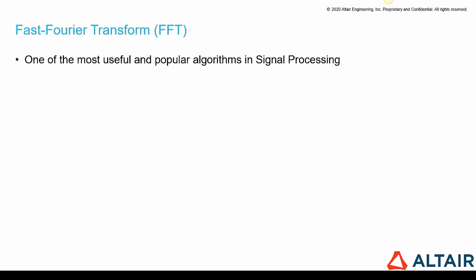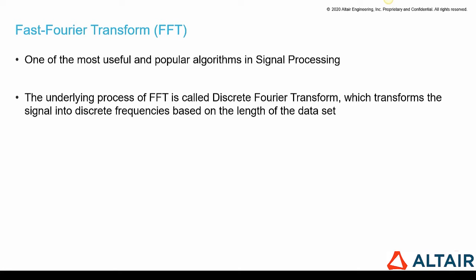Now let's talk about fast Fourier transform. Fast Fourier transform is one of the most useful and popular algorithms in signal processing. And the underlying process of FFT is called discrete Fourier transform, which transforms the signal into discrete frequencies based on the length of the data set.